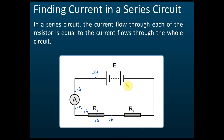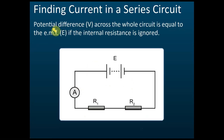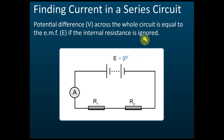Second, this is about potential difference. The potential difference across the whole circuit is equal to the EMF if the internal resistance is ignored. For example, if the EMF is equal to 3 volts, and we ignore the internal resistance — meaning if the question does not mention any internal resistance, we assume there is none — then the potential difference across points A and B is also 3 volts.